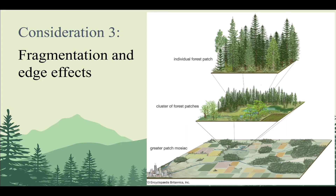Finally, consideration number three: when planning management actions we need to consider how our actions will contribute to the fragmentation of cover and the amount of edge conditions present at the landscape scale. For wildlife habitat, we can think of a patch as a suitable cover patch — and now that we have these maps, we can see how these patches are arranged on the landscape and how they build up into larger and larger scales.